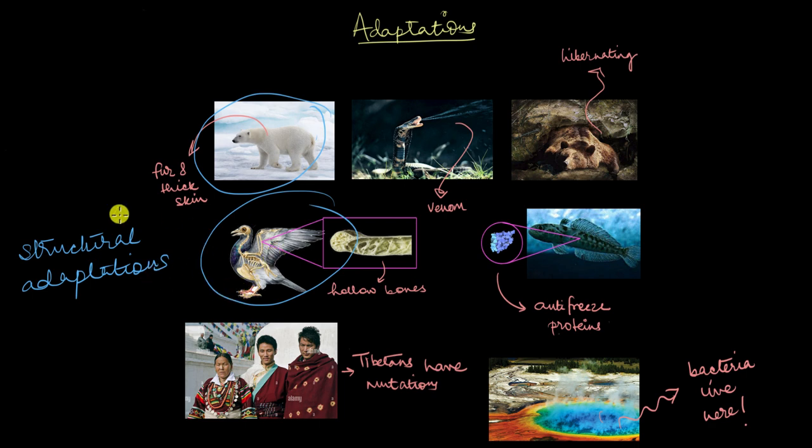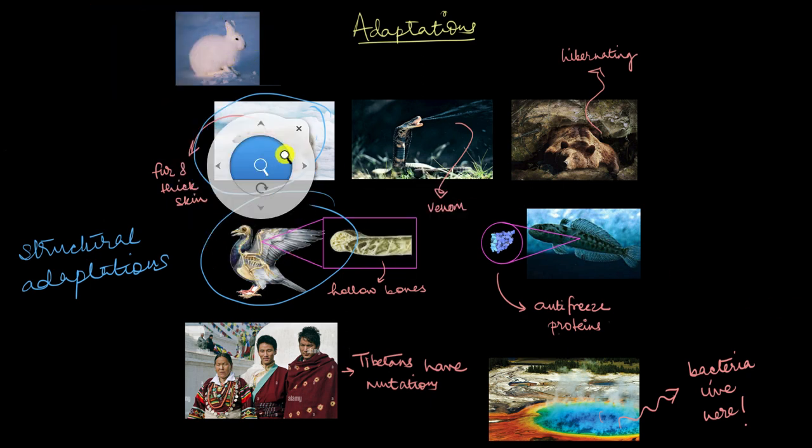Now you'll find a bunch of these structural adaptations in the animals which live in snowy regions like the poles. So let's have an example too, right over here. There we go. This is an arctic hare. Let's look at it a little bit closely.